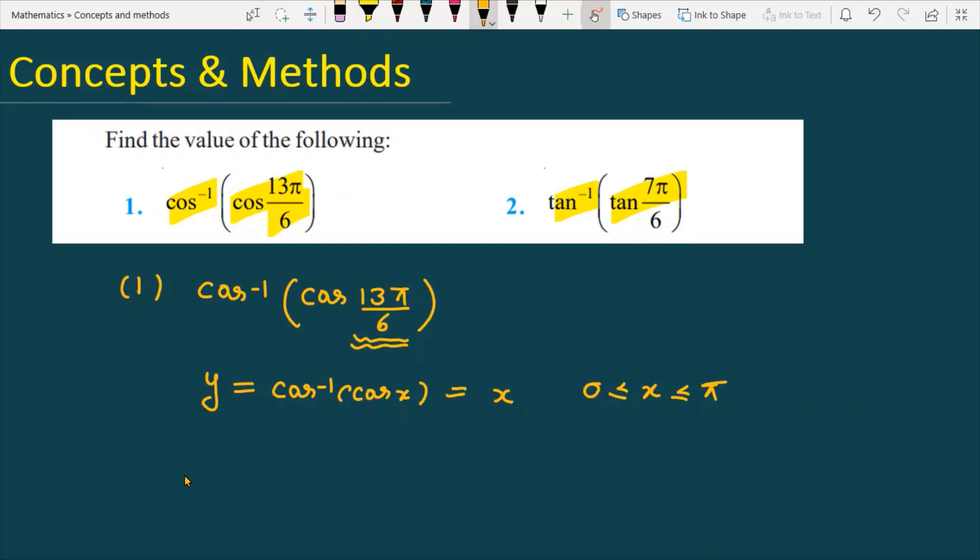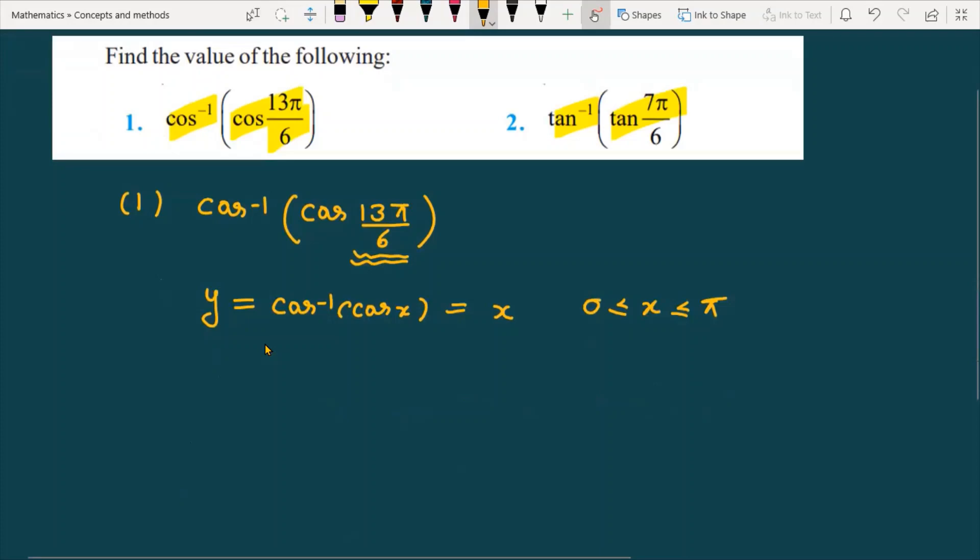You have to check whether the angle provided, which is 13π by 6, is already in the valid range. This angle is already greater than 2π, so I cannot directly replace it with 13π by 6. Let's make some changes. We are going to write this as 2π plus π upon 6.